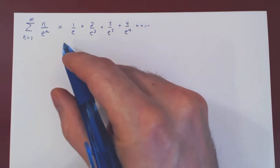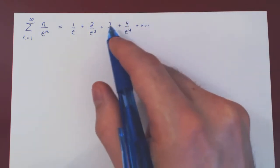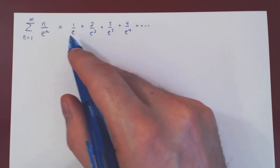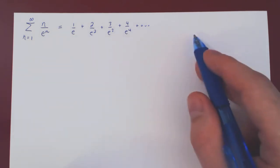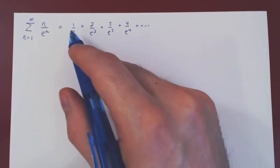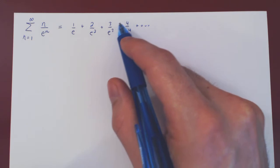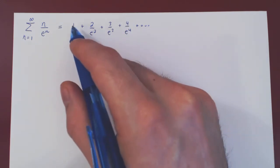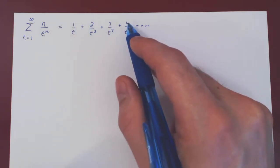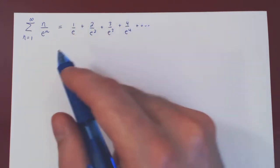We have here an infinite sum of positive numbers. If the series converges, this infinite sum will return a fixed real number. However, as we are adding positive terms, if the series diverges, it will do so by blowing up to positive infinity.